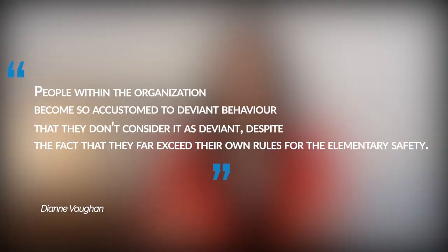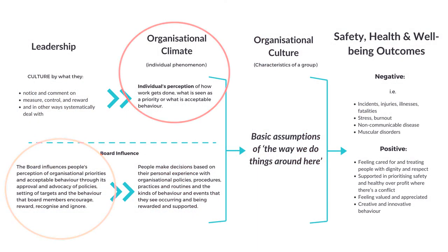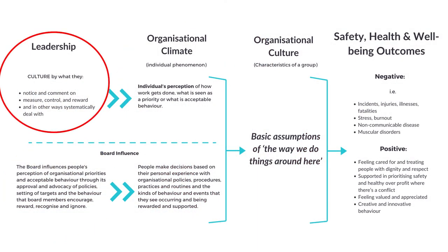Vaughn defined normalization of deviance as people within the organization becoming so accustomed to deviant behavior that they don't consider it deviant, despite the fact that they far exceed their own rules for elementary safety. The normalization of deviance is important to understand when looking at how the board influences structures and systems that influence people's perception of priorities. When we focus on blaming individuals for poor behavior or stupid decisions, we are not giving enough consideration to how organizational structures and systems influence people's decision making. The board influences people's perception of priorities — the organizational climate — through what it notices and comments on, measures, controls and rewards, and systematically deals with. And climate influences culture over time.